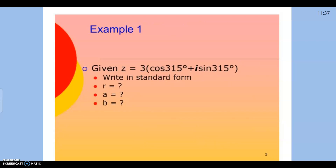So today we're going to go the other direction — starting from trig form and converting back to standard form. We're going to use that A is R cosine of theta and B is R sine of theta, and we have R cosine theta plus i sine theta.